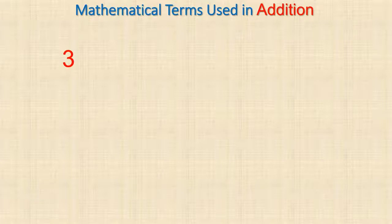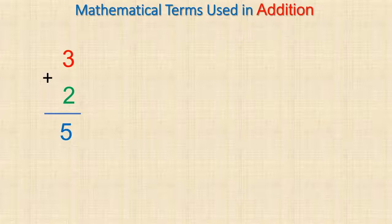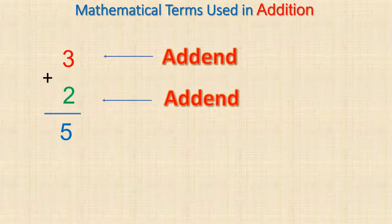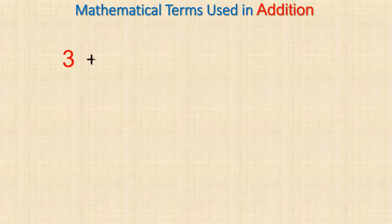We need to learn the mathematical terms used in addition. If you're adding three and two, which gives you five, what do you call three and two? Three is what we call an addend, and two is also an addend. The number which results from the addition of these two numbers is what we call the sum.